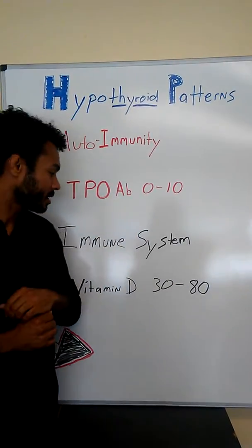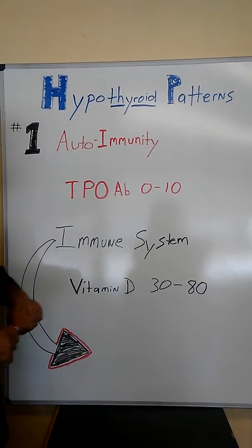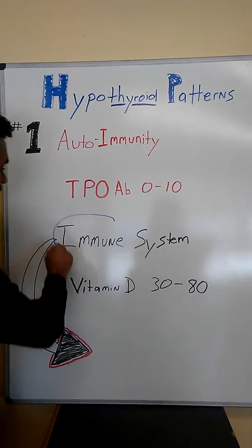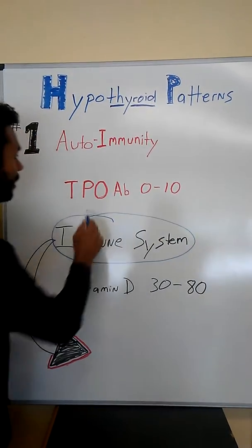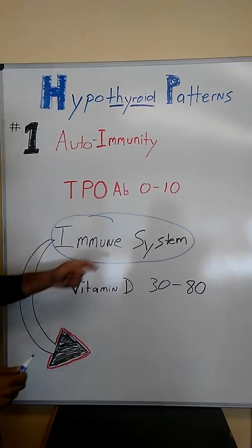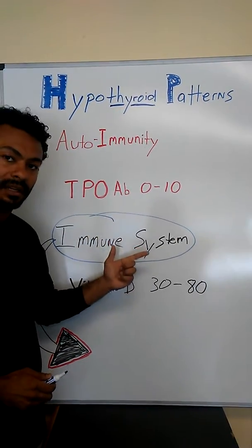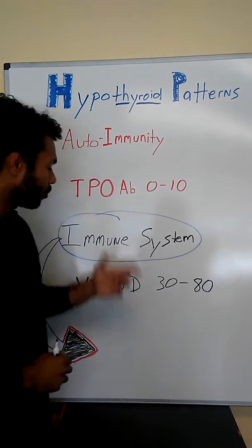Another thing that's interesting when you're dealing with autoimmunity—that means the immune system is the primary problem. If your hypothyroidism is caused by autoimmunity, then the focus should be on the immune system. And a lot of times this system is neglected and a lot of people don't address it.